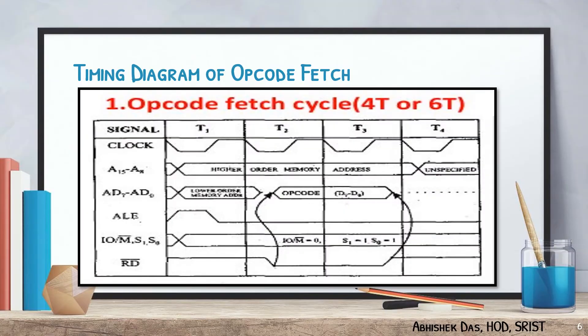Now we are going to discuss about the timing diagram of opcode fetch, which consists of either 4T-state or 6T-state. There are some signals which are affected by the timing diagram of the instruction: they are the clock, address line, data line, ALE which stands for Address Latch Enable, IOM bar, read bar, and write bar.